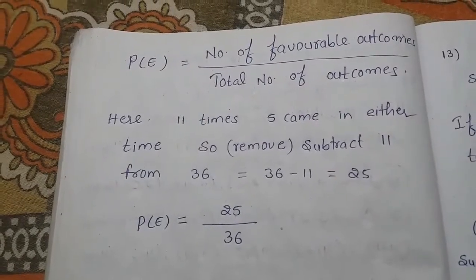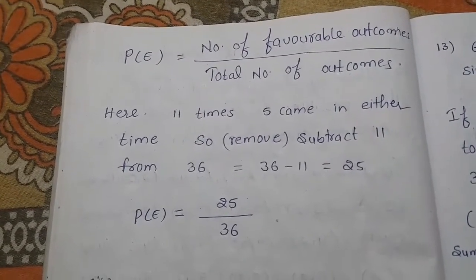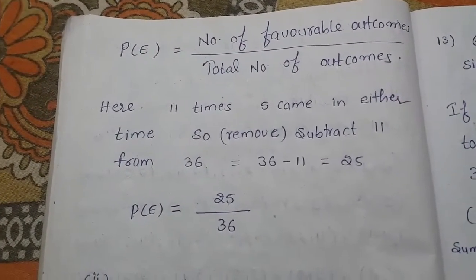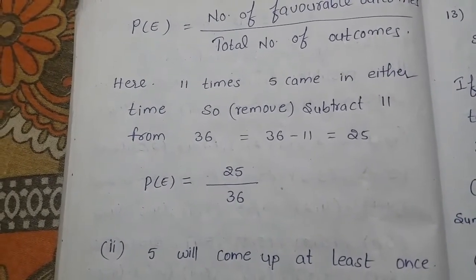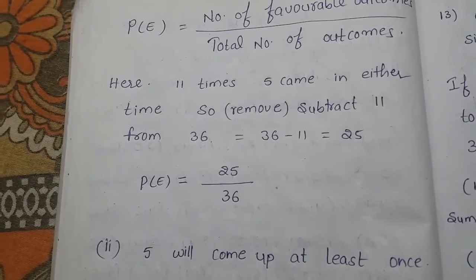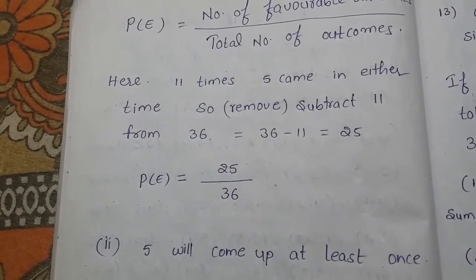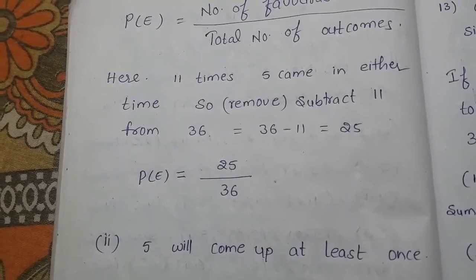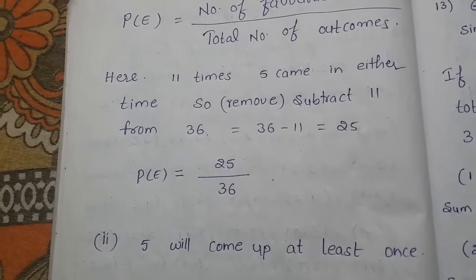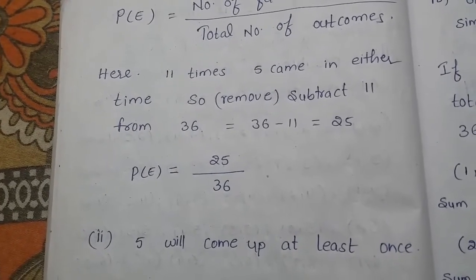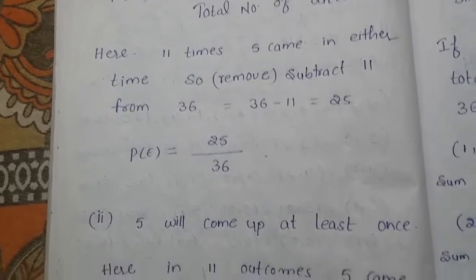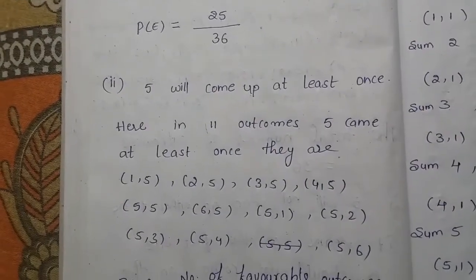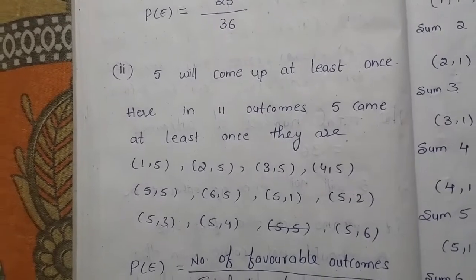The probability is the number of favorable outcomes divided by the total number of outcomes. An alternative method: 5 appeared at least once in 11 outcomes, so 36 minus 11 equals 25. Therefore, P(E) = 25/36.